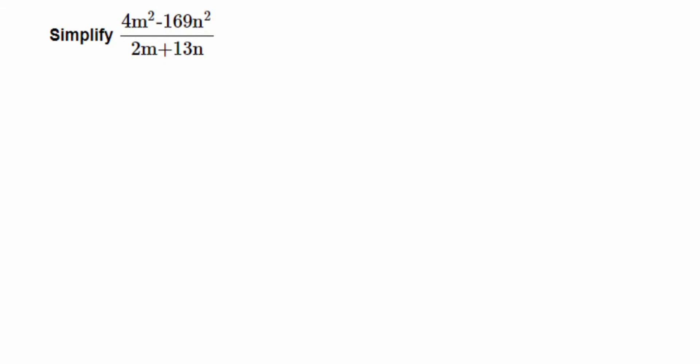Here I'm doing a question on factorization. The question is: simplify (4m² − 169n²) / (2m + 13n). If you look at the question, we cannot cancel any terms directly, so what we're going to do is factorize the numerator, because we cannot factorize 2m + 13n any further. So we're going to factorize 4m² − 169n².